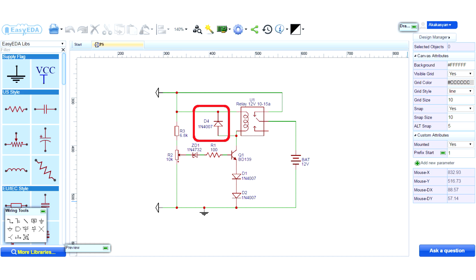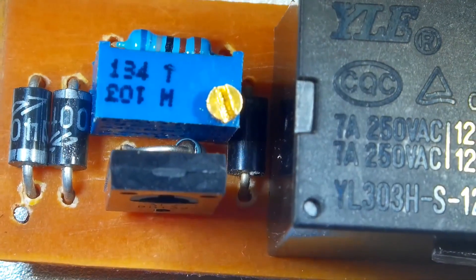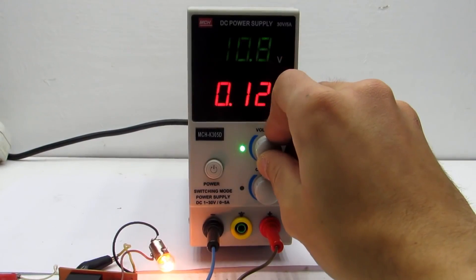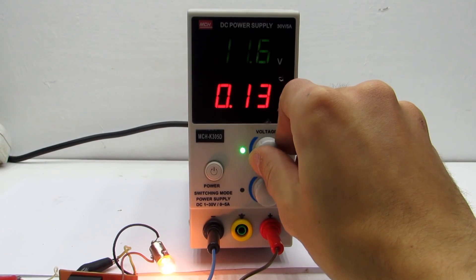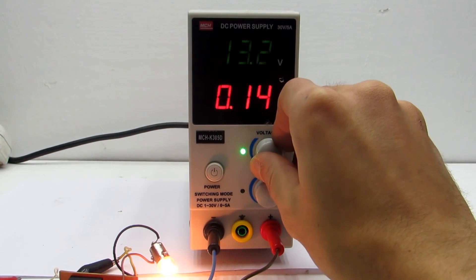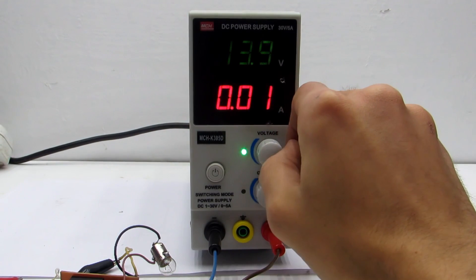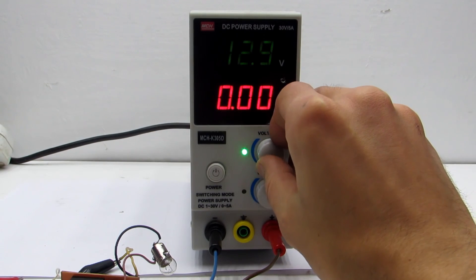Diode VD1 protects the transistor from self-induction of relay. Setup of the circuit is similar. The lamp simulates the charging process and connects instead of the battery. When exceeding a certain threshold the relay is activated and the lamp goes out.